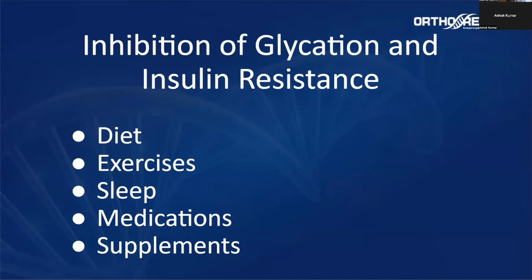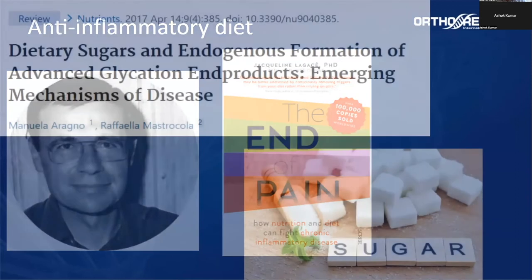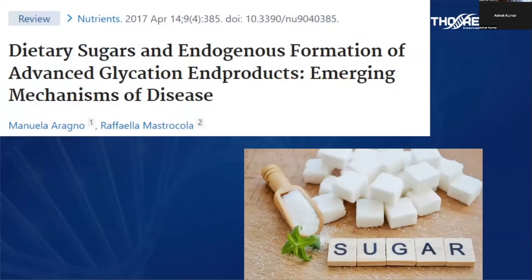What we can do is change the diet, stimulate exercise, improve the quality of sleep, and use some medications and supplements that we will talk about today. Dr. Jean Seignalet was a professor at the University of Montpellier in France, and he created an anti-inflammatory diet. One of the most inflammatory foods that we can consume is sugar, and we have to pay special attention to liquid sugars — the sugar inside sodas, juices, and many packaged products that we sometimes give to our children.